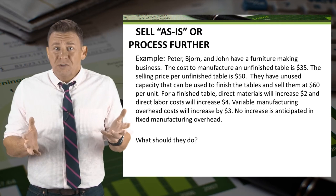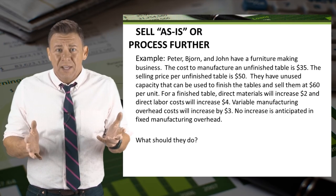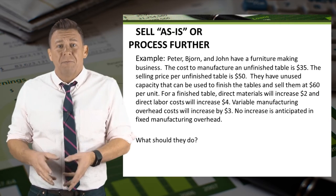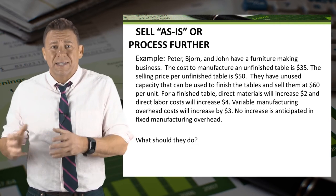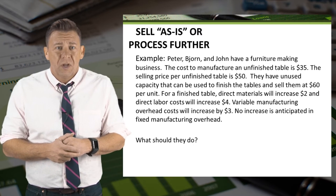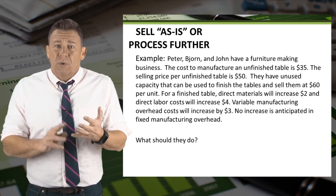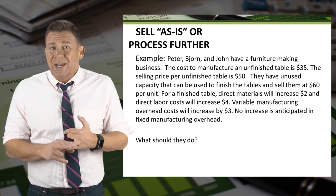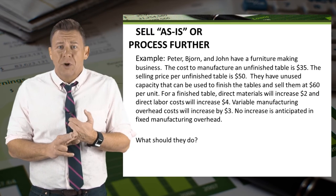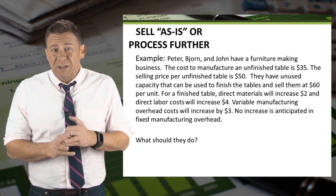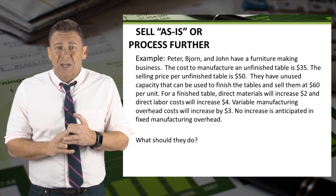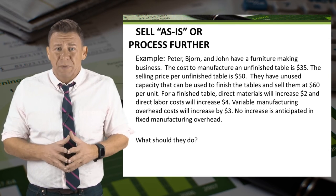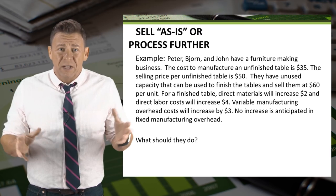They have unused capacity that can be used to finish the tables and sell them for $60 per unit. For a finished table, direct materials will increase $2, direct labor will increase $4, and variable manufacturing overhead costs will increase by $3. No increase is anticipated in fixed manufacturing overhead.